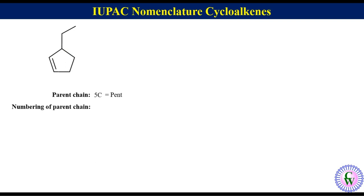We know that the carbons with the double bond get numbers 1 and 2. So we can do clockwise numbering as 1, 2, 3, 4, and 5, and anti-clockwise numbering as 1, 2, 3, 4, and 5. As we can see, there is only one substituted carbon, and clockwise numbering gives a lower number to it, so the clockwise numbering is the correct numbering.